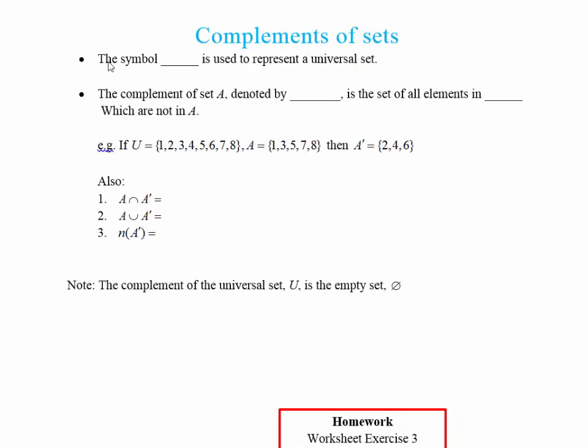Complement of Sets. So the first thing is we need to introduce some new notation. The symbol that we're now going to use to represent the universal set, so the main set that we're looking at, is going to be a U. So the universal set is U.